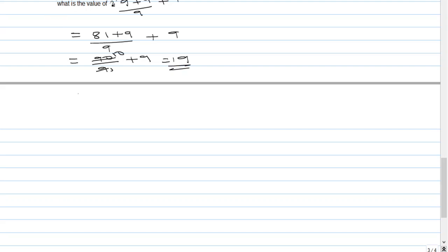What is the value of 9 squared plus 9 over 9 plus 9? 9 squared is 81, so we have 81 plus 9 over 9 plus 9. Adding 81 plus 9 gives us 90 over 9 plus 9.